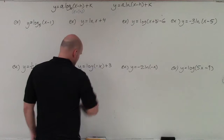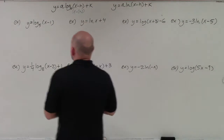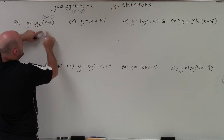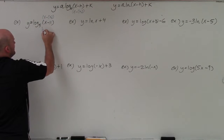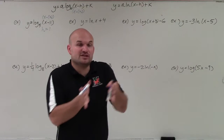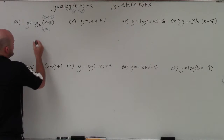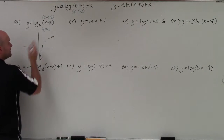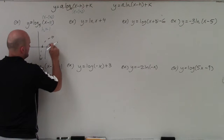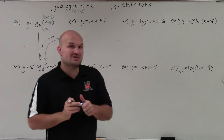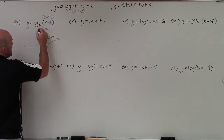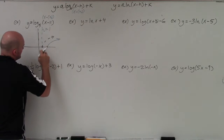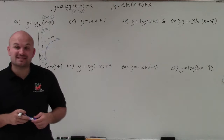Let's get into y equals log base 5 of (x minus 1). Remember, this can be written as x minus h. So x minus 1 means h is equal to positive 1, which tells me I'm going to be shifting the graph to the right one unit. Since the only other thing is the base of 5, which just affects the shape, I'll sketch my normal parent graph and then shift it one unit to the right. And importantly, that asymptote also gets shifted one unit to the right.